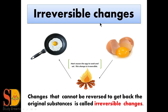Next is irreversible change. The change that cannot be reversed to get back the original substance is called irreversible change. If we have an egg yolk and heat it and cook it completely, the shape, size, and texture of the egg is completely changed. But we cannot reverse this process back — the original form of the egg cannot be obtained anymore.